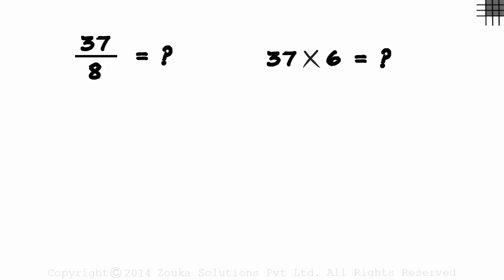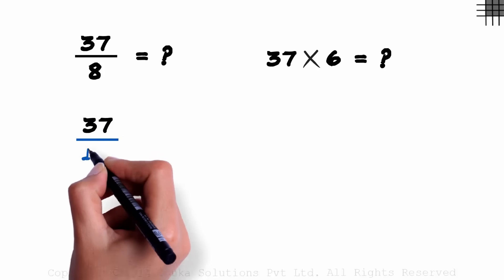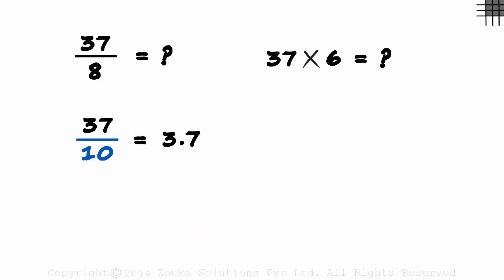But what if you are asked for the value of 37 divided by 10? It will be 3.7. It takes us just about a second to answer this. We just move the decimal place one place to the left.